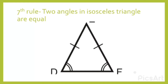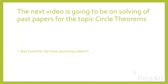The seventh rule is that two base angles in an isosceles triangle are equal. An isosceles triangle has two sides that are equal, and the angles opposite those equal sides are also equal. For example, if one of those angles is 40 degrees, the other will also be 40 degrees.